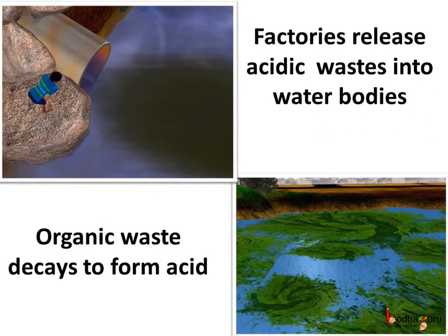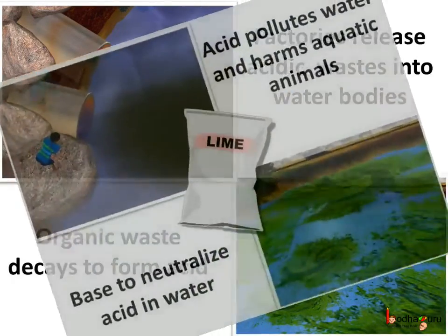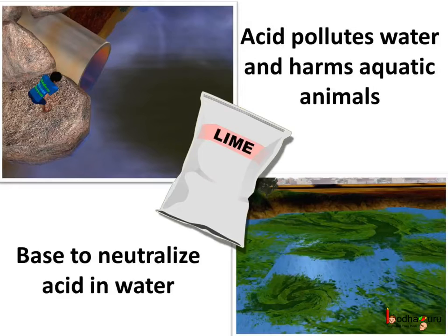Many acidic chemical wastes are released into water bodies like lakes by factories. People throw organic garbage like vegetable waste and leaves into the lakes and ponds. This organic garbage decays and forms acid. The acid thus formed pollutes the water and harms aquatic animals like fish. To prevent this acidity of water, we mix quick lime to water to stop the acidic effect.